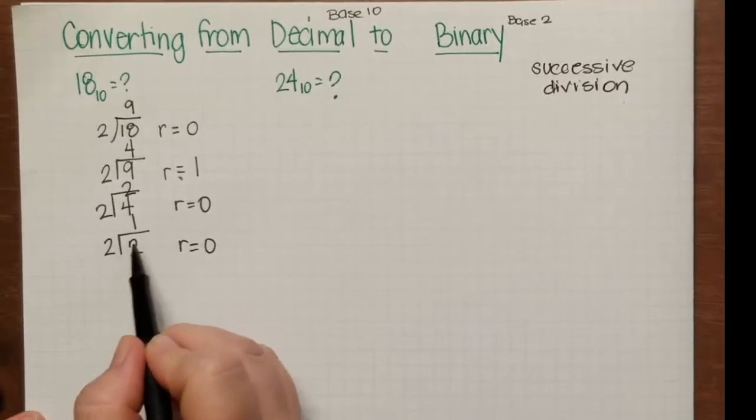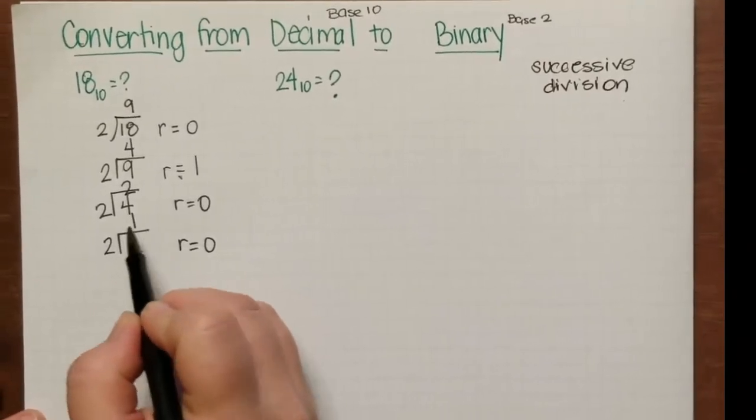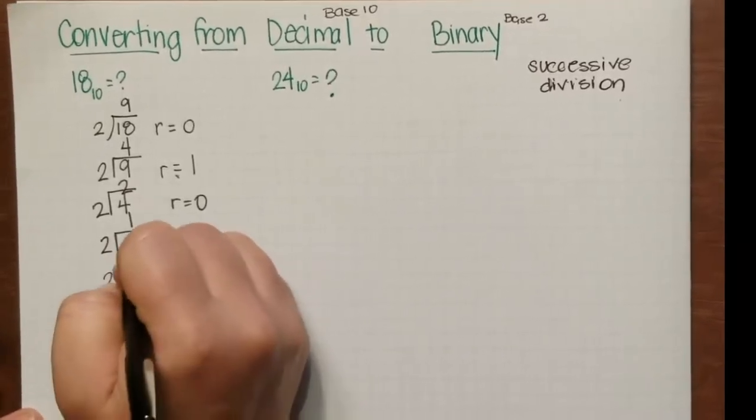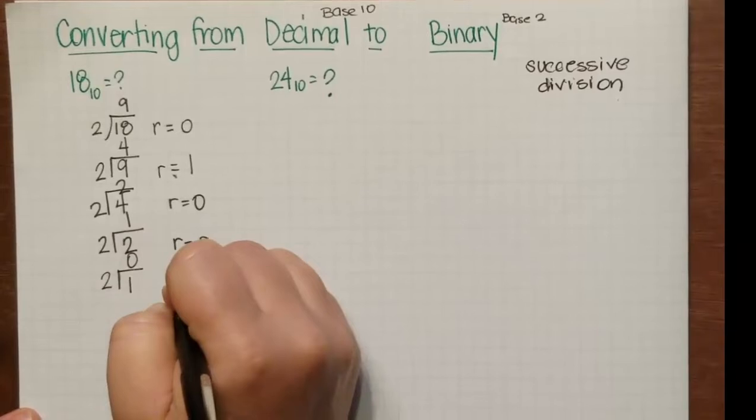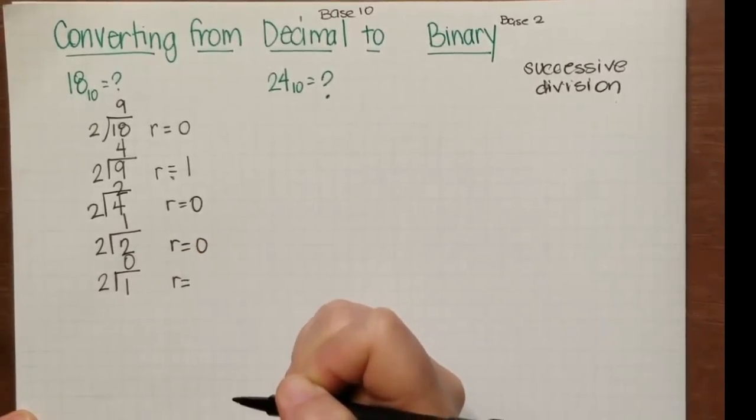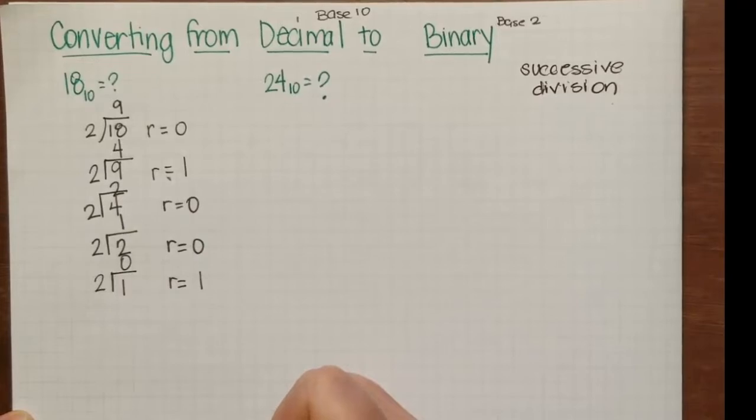And this is where you guys are going to be tempted to stop, but you can't do that until 2 goes in 0 times. So 2 goes into 1 zero times with a remainder of 1.